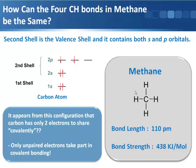What actually is the case? How do we get this molecule methane that has these four bonds that are all identical? They're all 110 picometers in length and they all have a bond strength of 438 kilojoules per mole. What is actually happening here? What type of orbitals are overlapping to give these bonds?